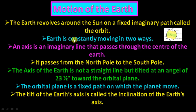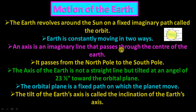Now, motion of the earth. The earth revolves around the sun on a fixed imaginary path called orbit. Earth is constantly moving in two ways: first, rotation, and second, revolution.